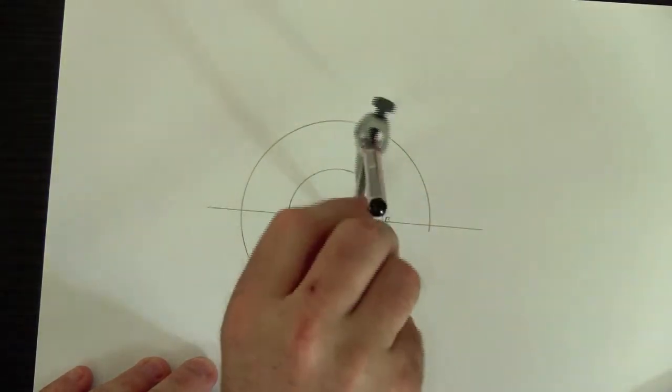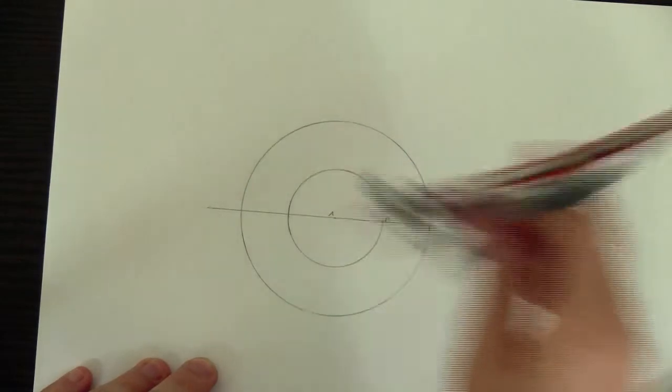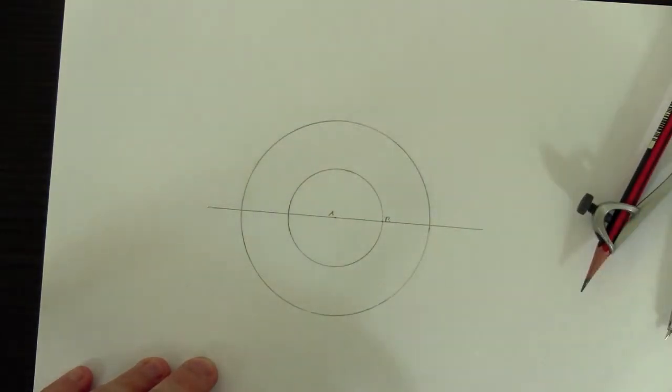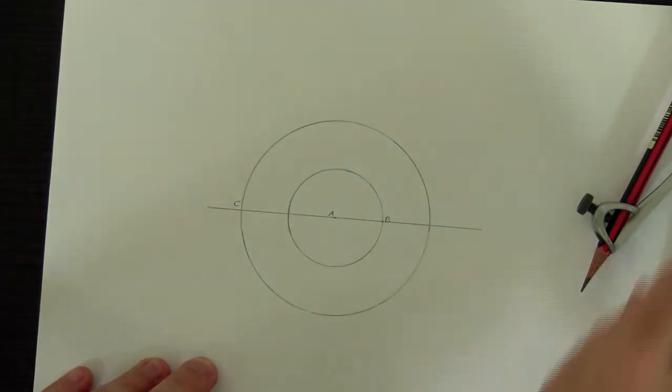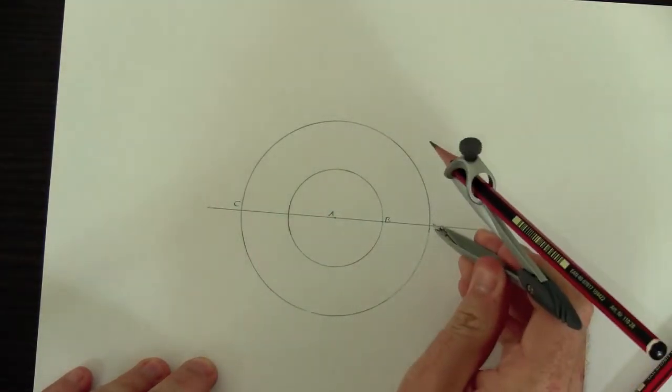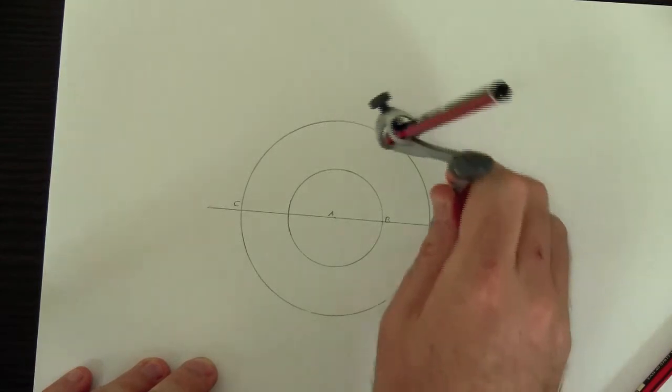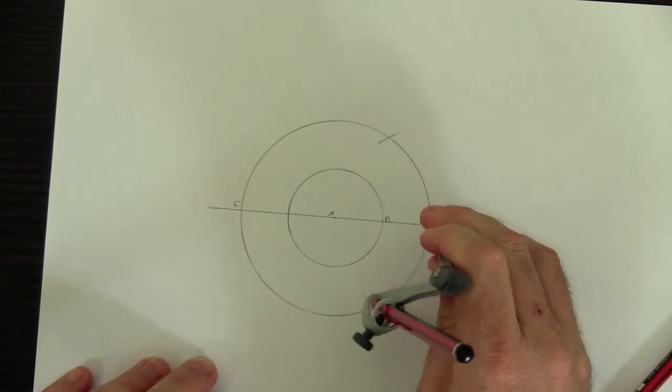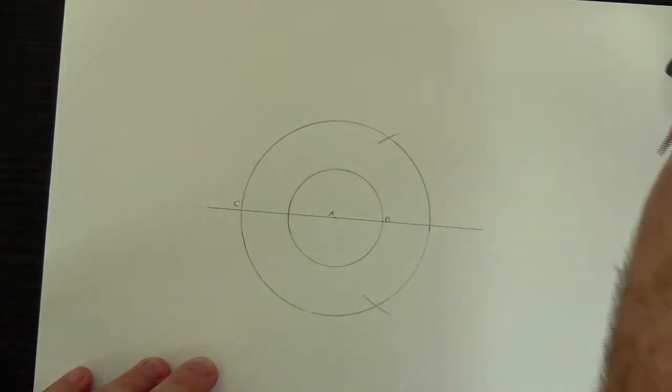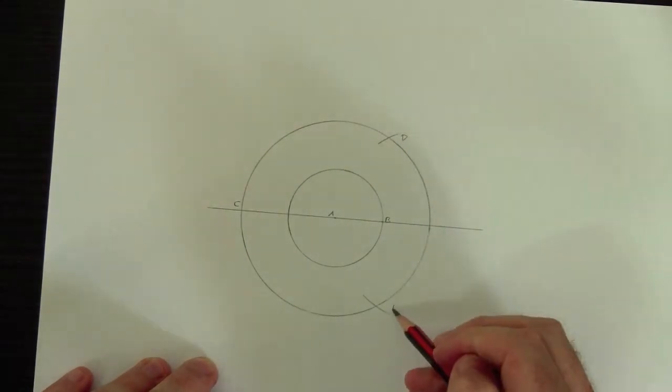Once we've done that, that gives us a new point here. I'll call this point C. And another new point here, which I won't give a name. But you put the compass point on that unnamed point. And make two new points here and here by drawing two small arcs. We'll call those D and E.